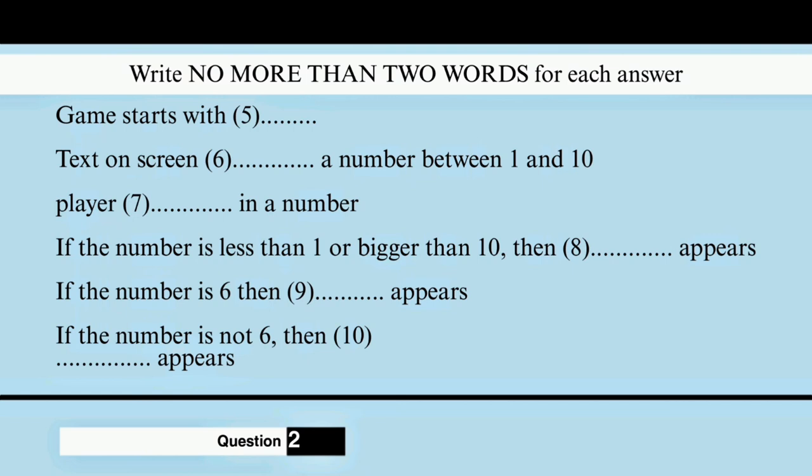And line 60 says, if I equals 6, then PRINT. Correct. Ah, okay. So if they've typed 6, they've got it right. And if they haven't typed 6, which is the next line, then try again comes up on the screen, and that takes them back to where they choose another number. It's clever. Well done.